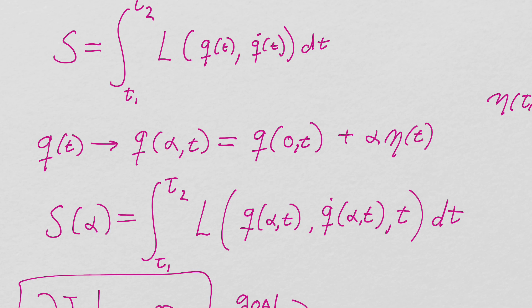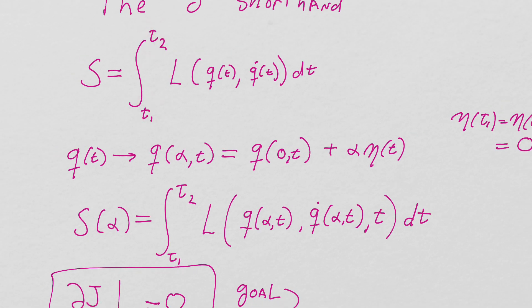So we need to create something where when alpha is zero, q is a function of time only. When alpha is zero, we end up with q of t, the same q of t we were talking about earlier. And when alpha is not zero, we're adding in a certain amount of some other arbitrary function eta, whose only constraints are that eta at t equals 1 and t equals 2, eta at the two ends of the variation are zero.